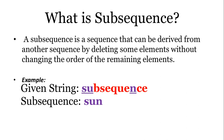A sequence can be anything like a string. For example, the word 'subsequence' itself is a string. A subsequence from this string could be 'son'. The characters s, u, and n lie within the word 'subsequence', so we can say that 'son' is a subsequence of the string 'subsequence'.